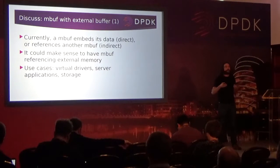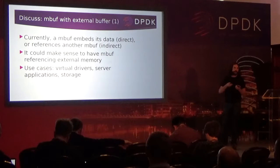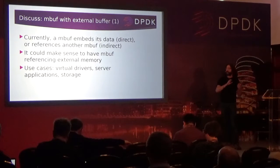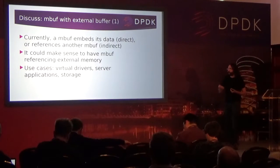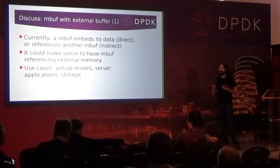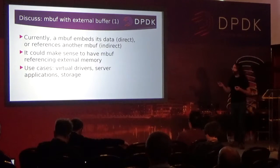For example, if you are implementing a sort of web server, you mmap a file or list of files into your memory, which is locked, and you want to send this data. Today, your only option is to copy the data inside the mbuf and send it. What I think could be useful is to have an mbuf that references external data that you can send. This is already done by some VHOST applications, but I think some things are missing to do this properly.